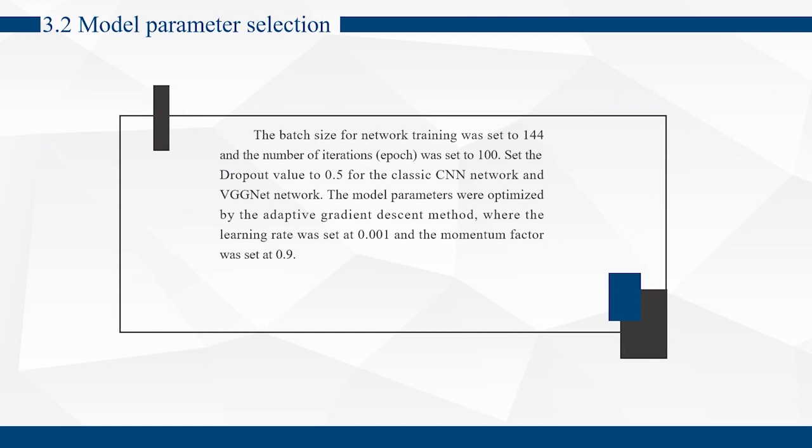Model parameter selection. The batch size for network training was set to 144, and the number of iterations was set to 100. Set the dropout value to 0.5 for the classic CNN network and VGG network. The model parameters were optimized by the adaptive gradient descent method, where the learning rate was set at 0.001 and the momentum factor was set at 0.9.